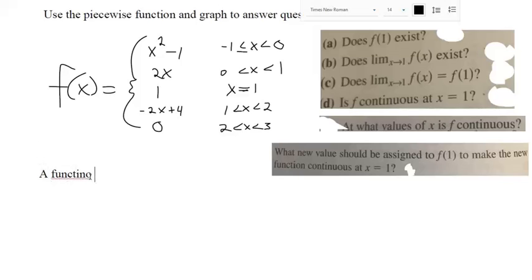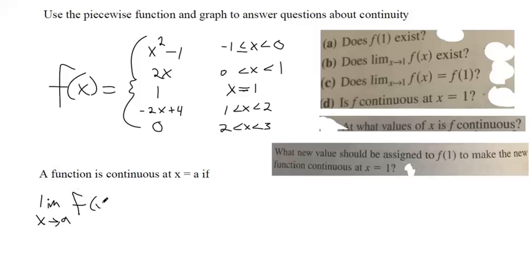So the calculus definition of continuity is that a function is continuous at x equals a if the limit as x approaches whatever number you're talking about, like if we're checking out x equals 2, the limit as x approaches 2 of f of x from the left is equal to the limit as x approaches 2, or in this case a. I'm just keeping it abstract with the letter a, it could be whatever number you want.